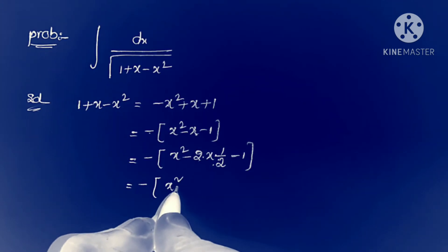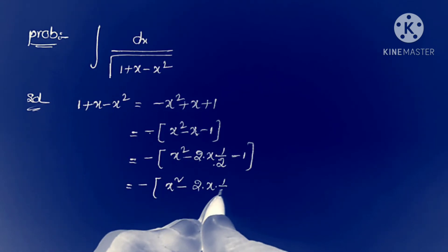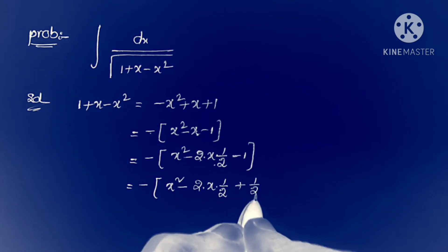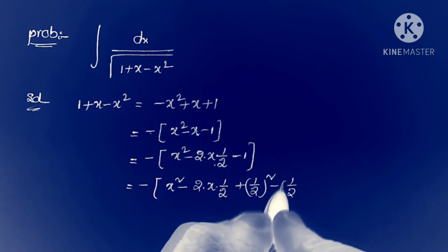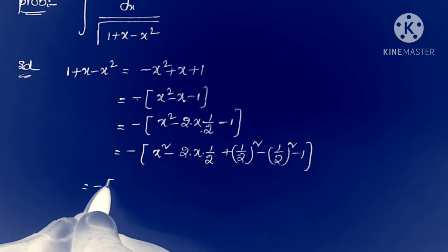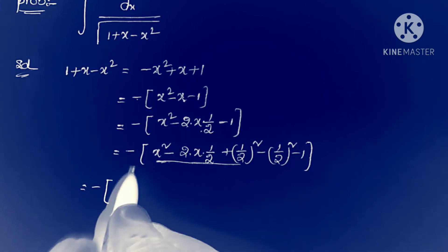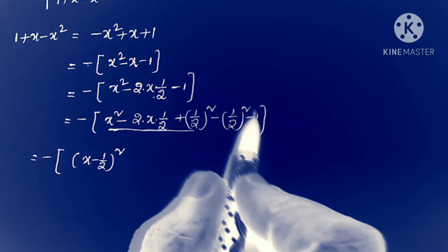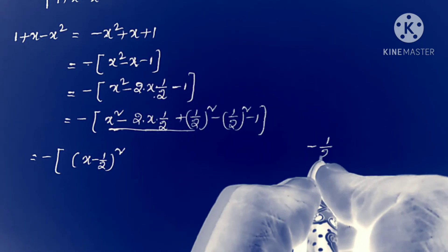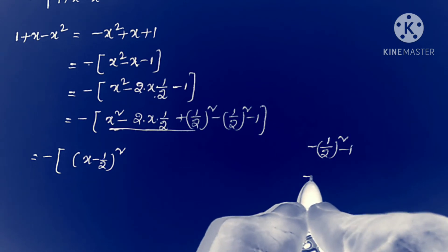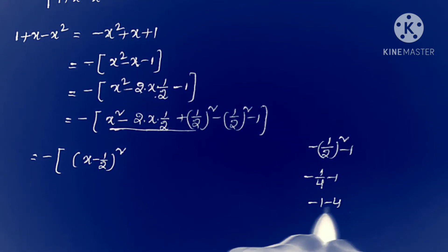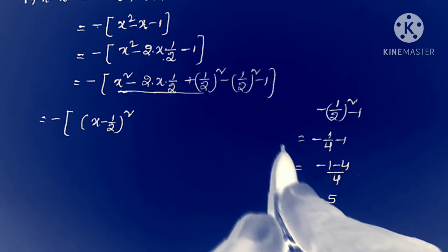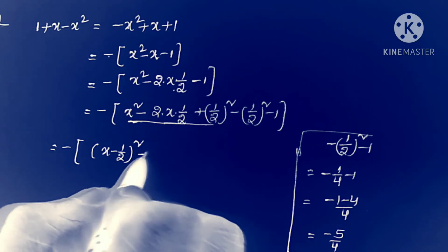This equals minus of x squared minus 2 times x times 1 by 2, which is in the form a squared minus 2ab, where b equals 1 by 2. Adding b squared: minus of x squared minus 2 times x times 1 by 2 plus (1 by 2) whole squared minus (1 by 2) whole squared minus 1. The squared form is (x minus 1 by 2) whole squared. The constant simplification: minus 1 by 4 minus 1 equals minus 5 by 4.